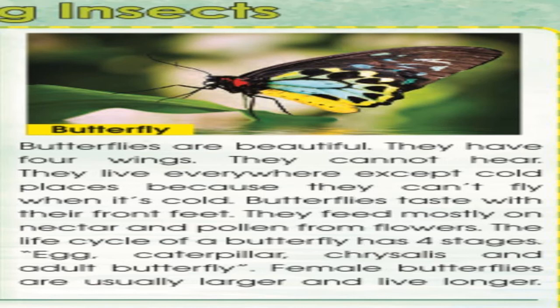Butterflies taste with their front feet. They feed mostly on nectar and pollen from flowers. The life cycle of a butterfly has four stages: egg, caterpillar, chrysalis, and adult butterfly. Female butterflies are usually larger and live longer.